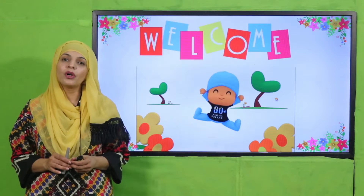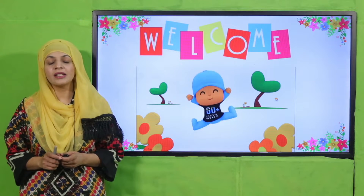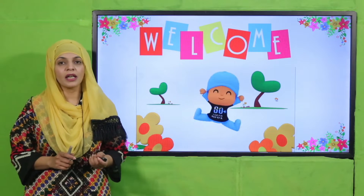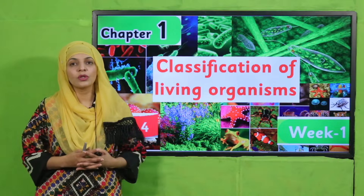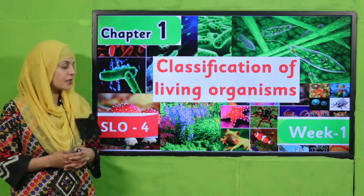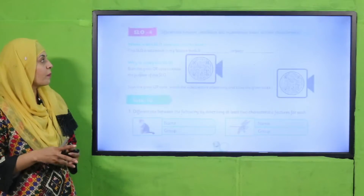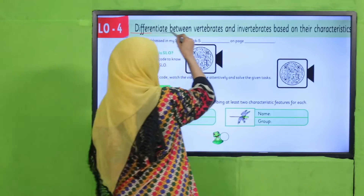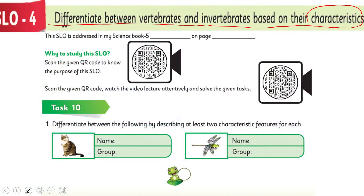Bismillahirrahmanirrahim. Assalamu alaikum, I hope you all are fine and staying safe and happy. I am your science teacher, Mr. Heen, and I welcome you all to your science class. As you know, we are on Chapter Number One: Classification of Living Organisms. Today we are going to discuss SLO number four. According to SLO number four, students will be able to differentiate between vertebrates and invertebrates based on their characteristics.